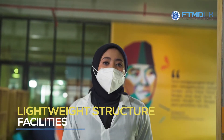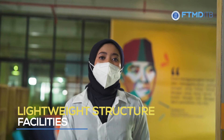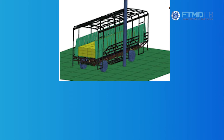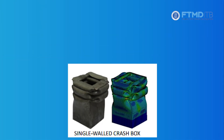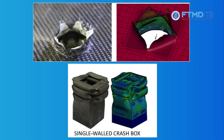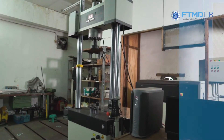We are at the Light Structures Facility, located in the PAU Building, third floor. At the Light Structures Laboratory, we work on design, analysis and optimization of lightweight structures. In this facility, we are conducting several research projects related to crashworthiness, blastworthiness, and battery protection.